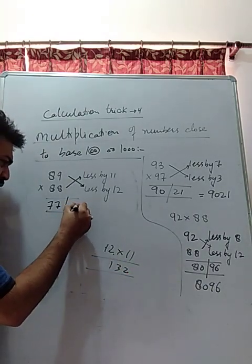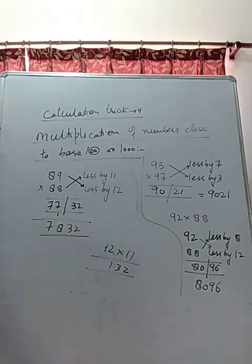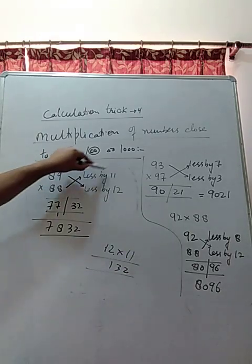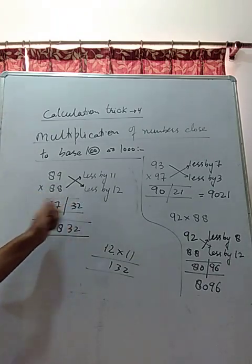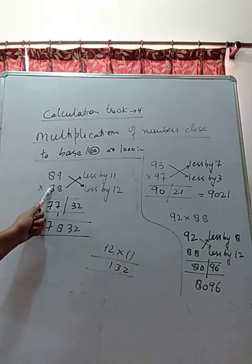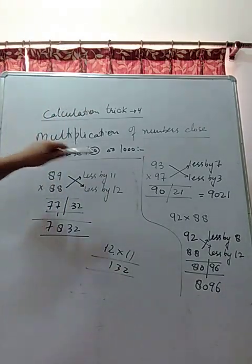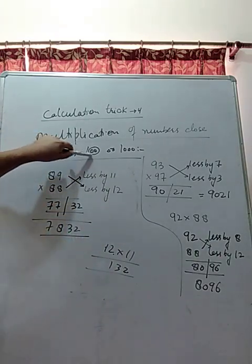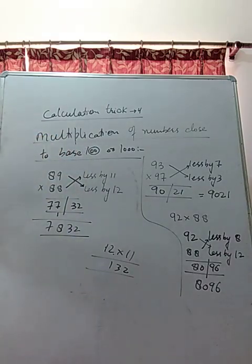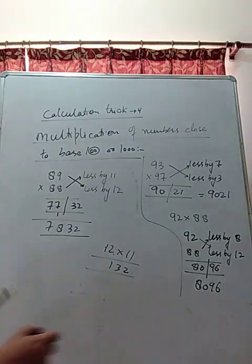Now here you have to keep one thing in mind: when you get 132, but these numbers are close to 100, and 100 has two zeros, so always keep only these two digits. What you get is 132. We will write 32, and 1 will be carried. The answer is 7832. Again, 89 is less by 11 than 100, 88 is less by 12. Cross subtract them: 89 minus 12 is 77, 88 minus 11 is 77. So write 77. Now 11 into 12 is 132, but you have to keep only two digits here because they are close to base 100. So write 32, carry 1. It's 7832.